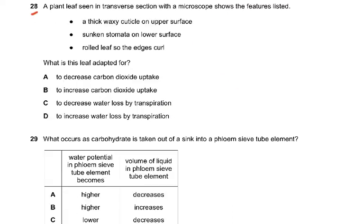Question 28. A plant leaf seen in transverse section with a microscope shows the features listed: a thick waxy cuticle on the upper surface, sunken stomata on the lower surface, rolled leaf so the edges curl. What is this leaf adapted for? This is a xerophyte. It is adapted to decrease water loss by transpiration.